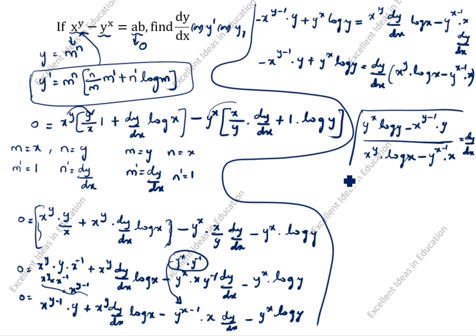So this is the answer. We got dy by dx value. This is the first method. We will see the second method. x power y minus y power x is equal to 80. This is the question. We will take u is equal to x power y, v is equal to y power x. So u minus v is equal to 80.